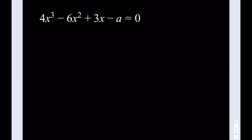I do have a cubic equation, but to make matters worse, I also have a here. So what I'm going to do is write this as a perfect cube, because that will make things a lot easier. First, I'm going to isolate the a — I'll add a to both sides. Then I'm going to multiply both sides by 2.